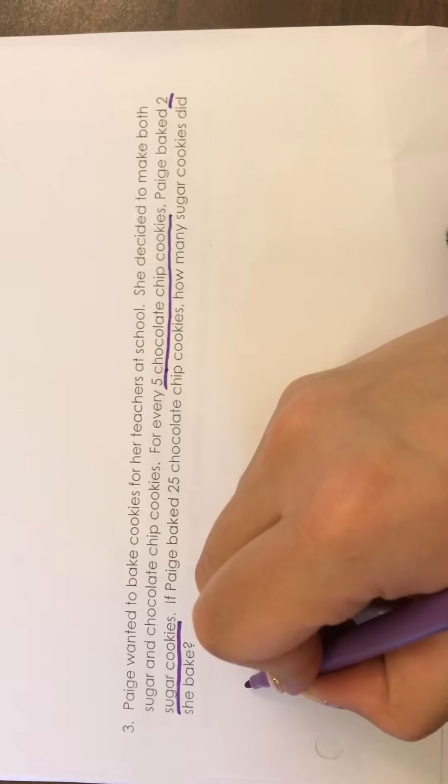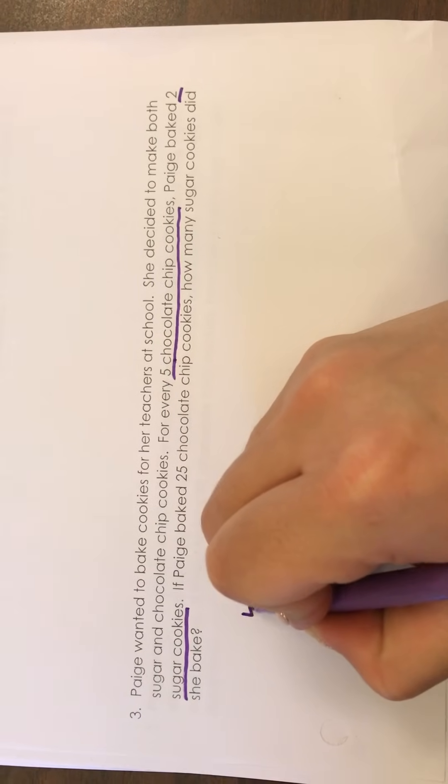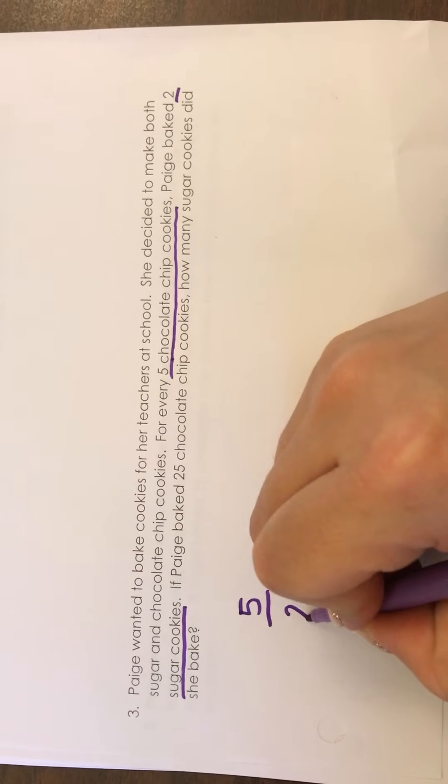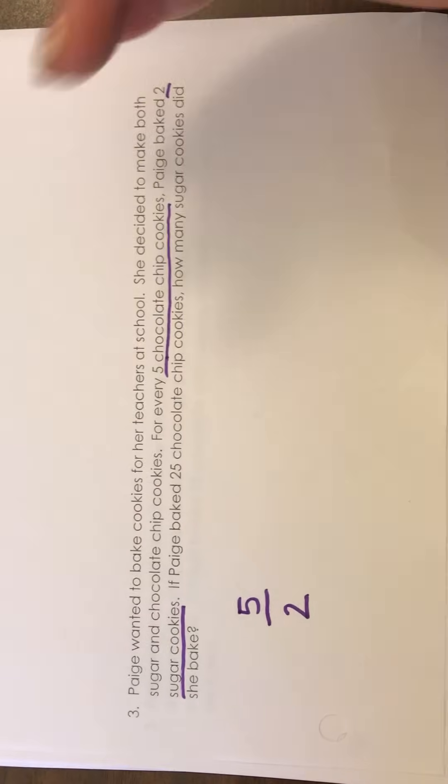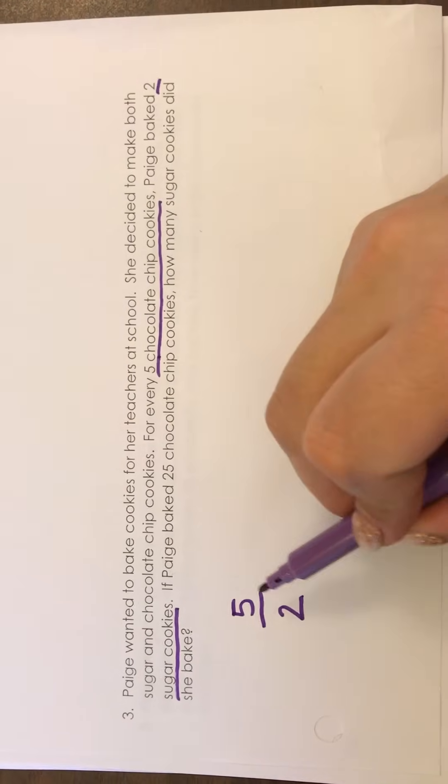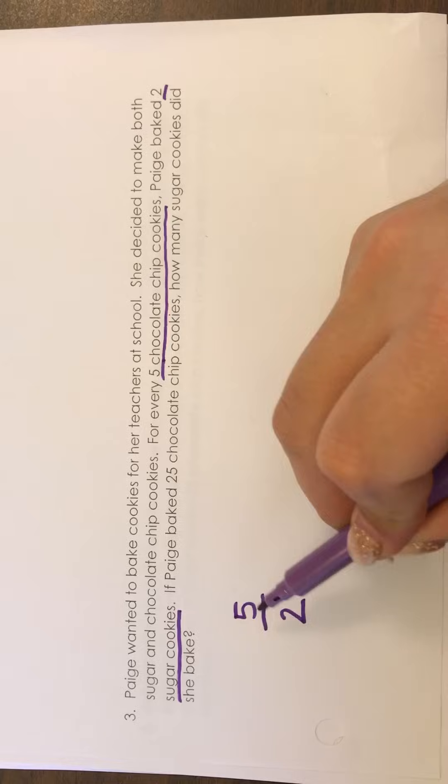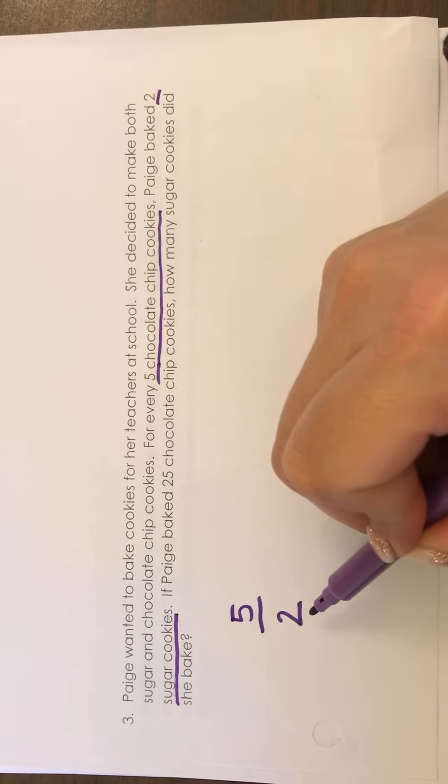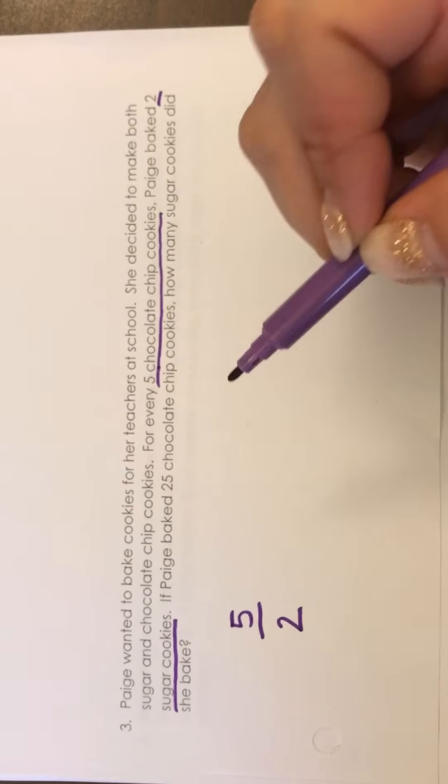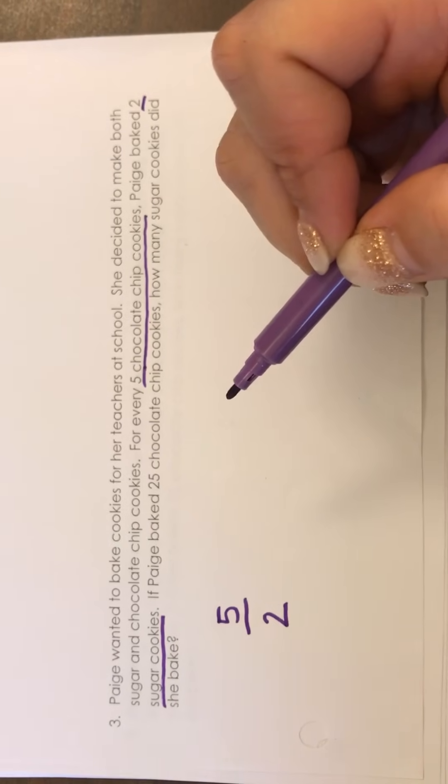So first thing I'm going to do is write my ratio. I have five to two, and this time since it's tape diagrams it needs to be written differently. So we know that ratios can also be written as a fraction. So I'm going to do five over two, and I'm also going to label just like I did in my chart that I did in the previous video.